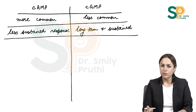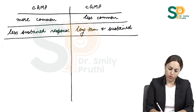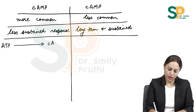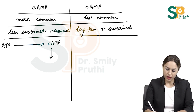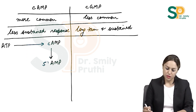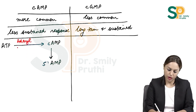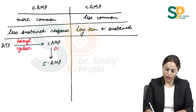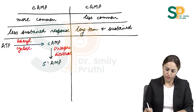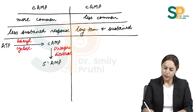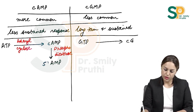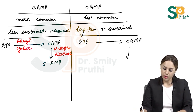What are the enzymes involved in the formation and destruction of these two second messengers? ATP forms cyclic AMP via adenyl cyclase, and cyclic AMP is destroyed to 5-AMP by phosphodiesterase. Similarly, GTP forms cyclic GMP and this is destroyed to 5-GMP.